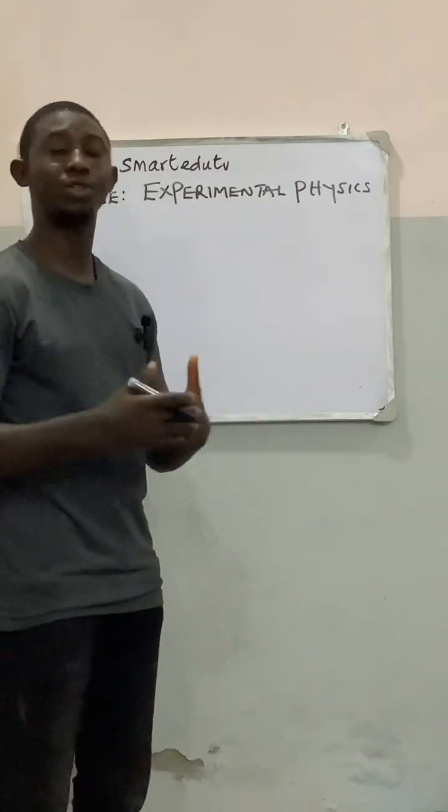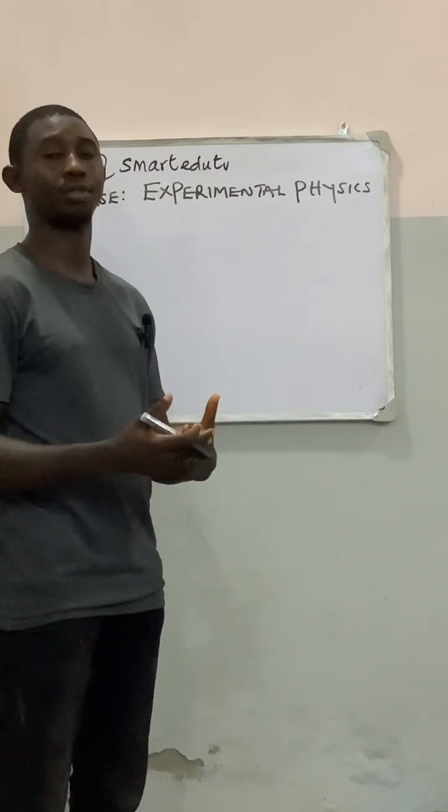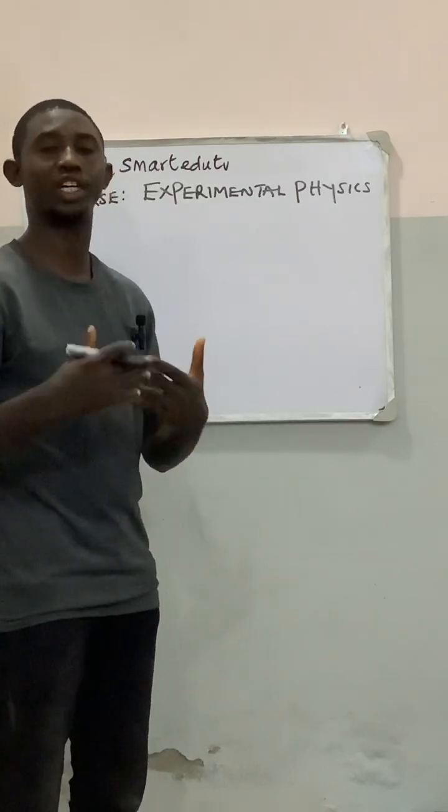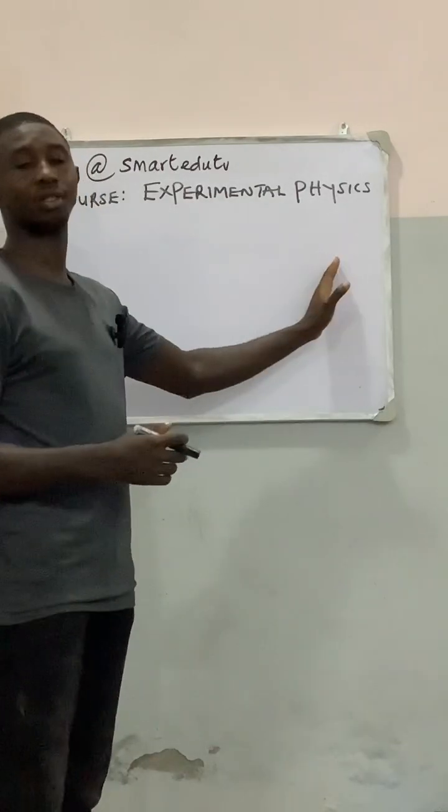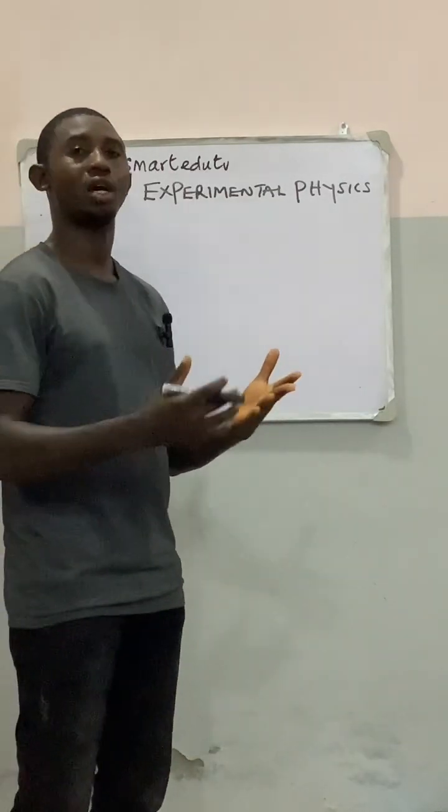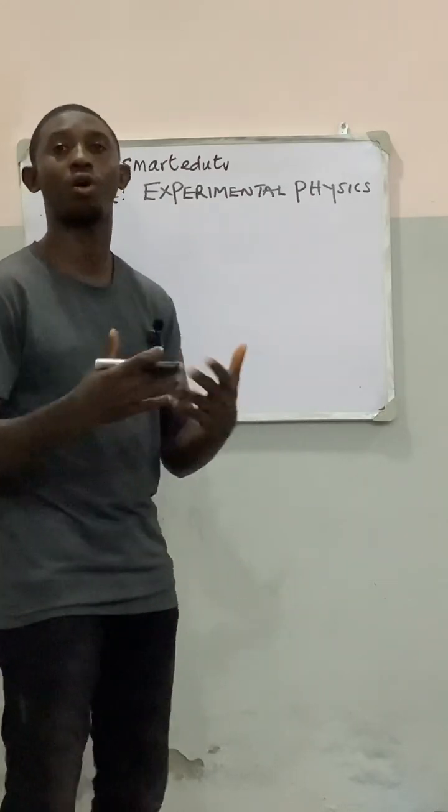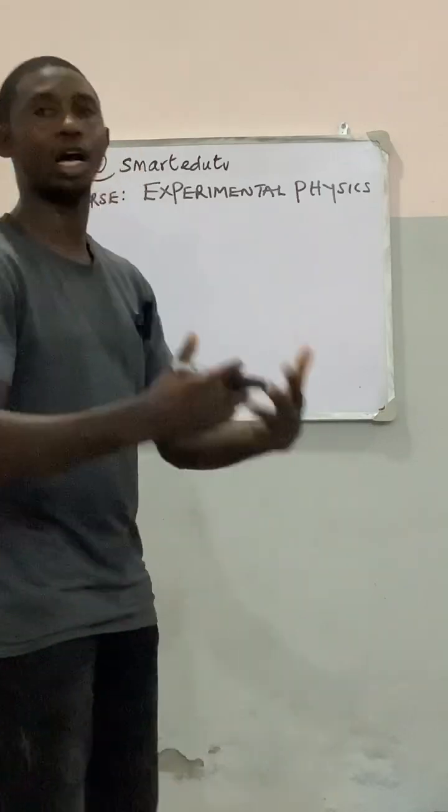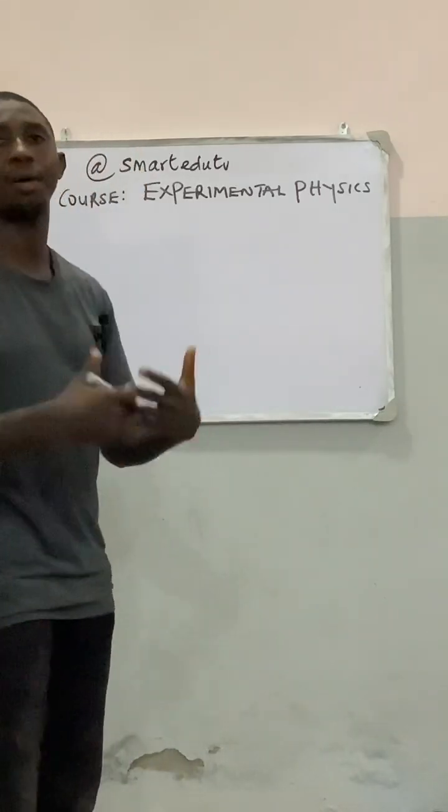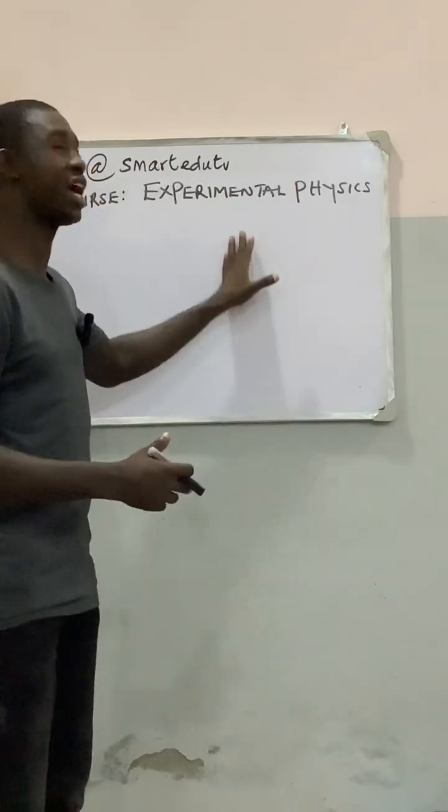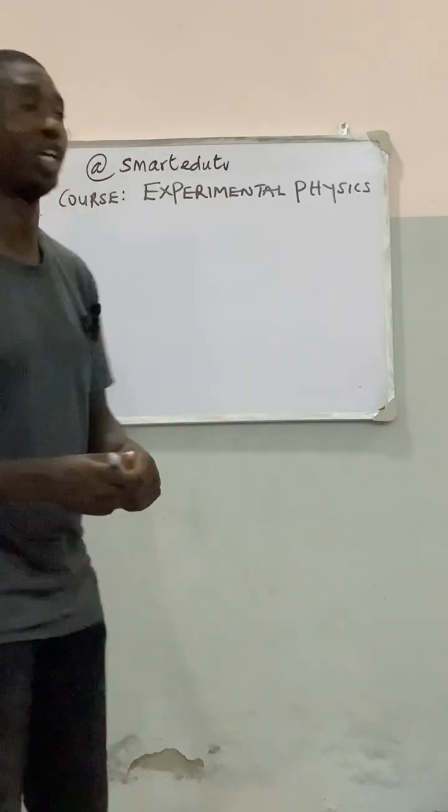These are some of the tips we are used to from our secondary school days which need modification. Talking about experimental physics, we are trying to look at how we report experimental laboratory work, how we put it down in form of experiments. There are some terms we are going to be used to under experimental physics.